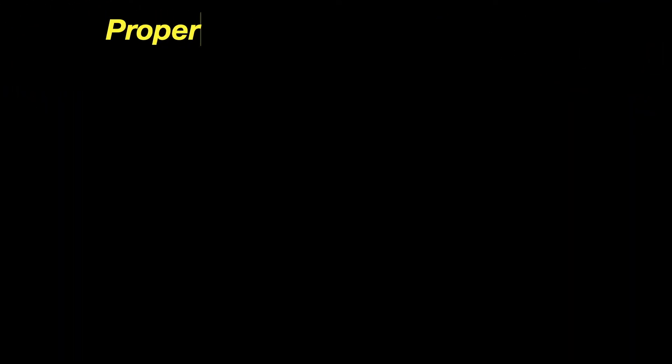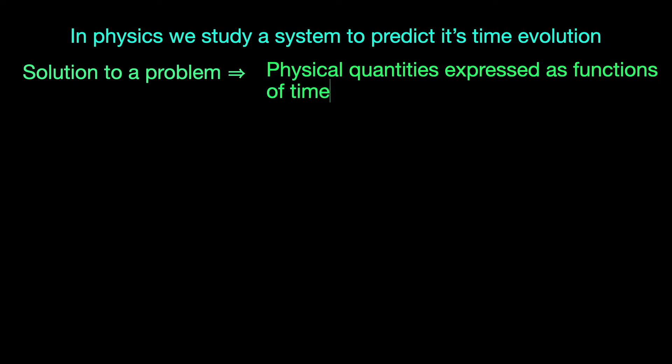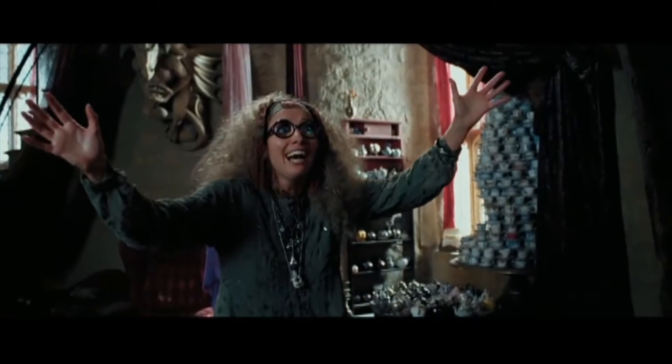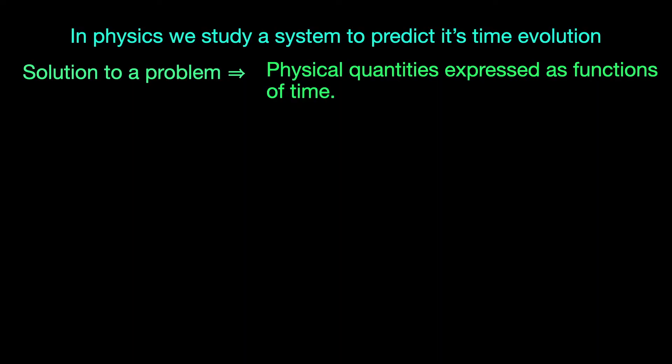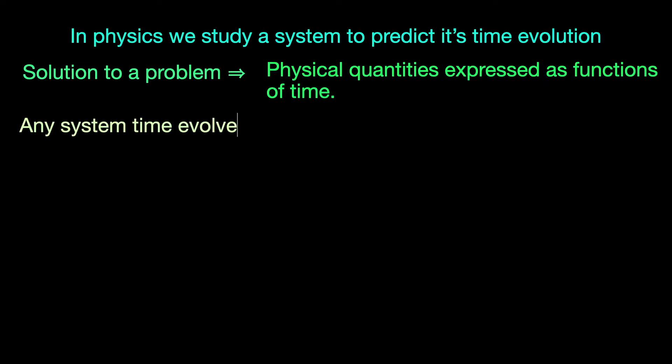Now, in physics, the end goal for studying any physical system is to predict its future course of action or its fate so to speak. So in a way, all physicists are nothing but fortune tellers. Anyway, to predict the future of a system, we should not need our proper time. Ideally, we can ignore it completely and work solely with the system's proper time because it is the system that is under the spotlight here being studied, and it will evolve according to its own proper time.